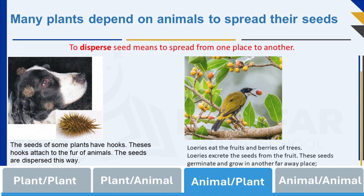Some plants make tasty fruits, which encourages animals to eat them. The seeds then pass through the animal unharmed and out the other end. The loweries, a bird, eat the fruits and berries of trees, then excrete the seeds in another place where these seeds germinate and grow. This is another way in which animals help plant seeds to spread.